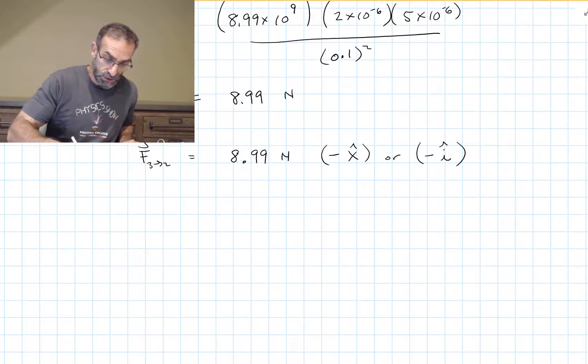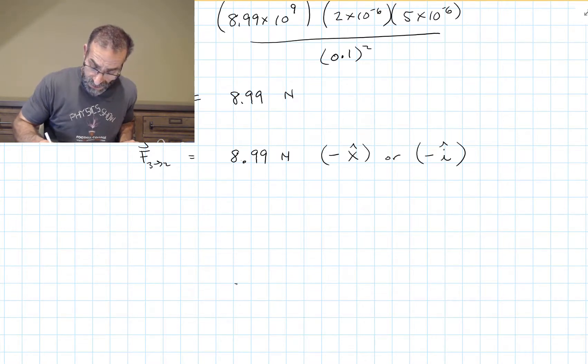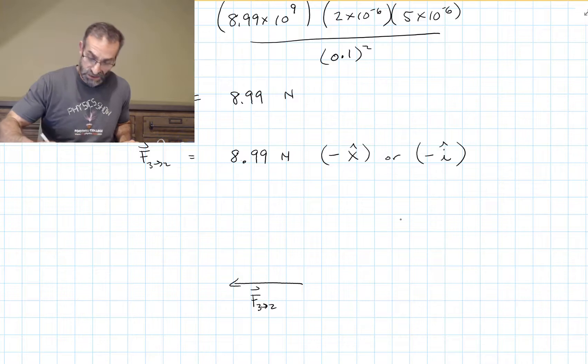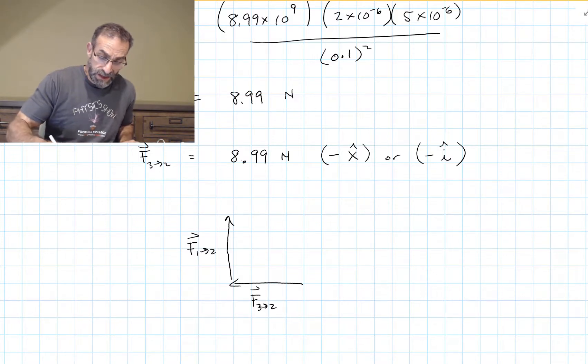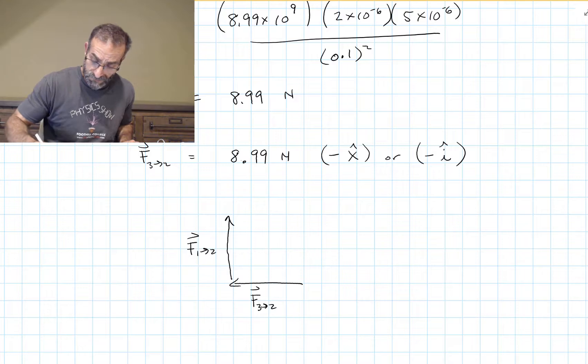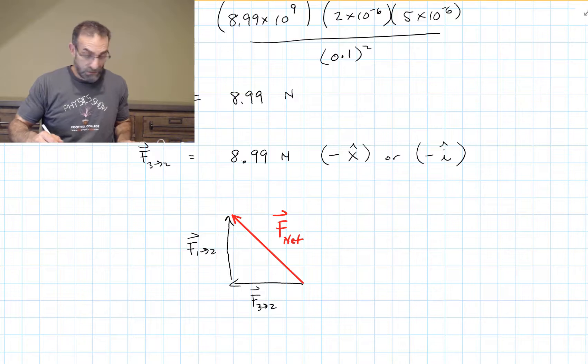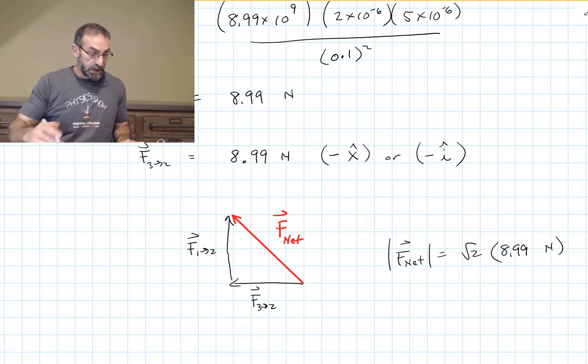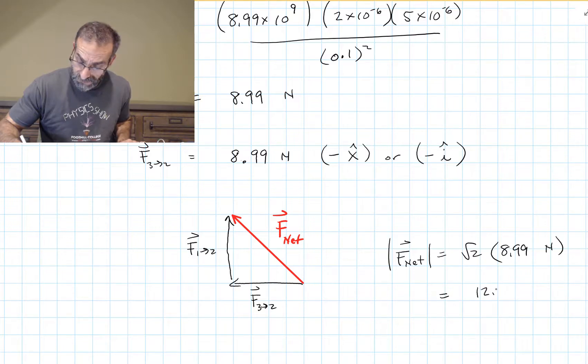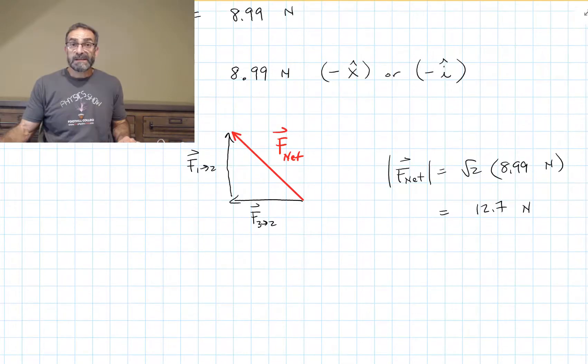So to get the net force, we would add these together. We would have the force of F3 acting on 2, plus the force of F1 acting on 2. And that would give us this net force acting on charge 2. We would have a magnitude of the square root of 2 times 8.99 newtons, and the direction would be at that 45 degree angle. That's using forces.